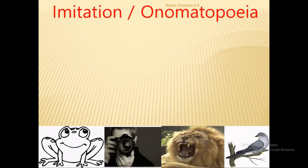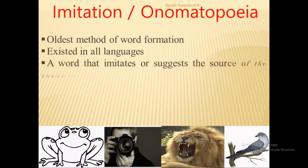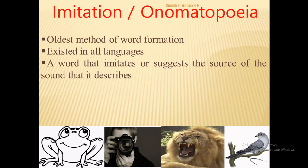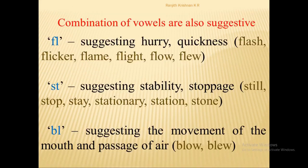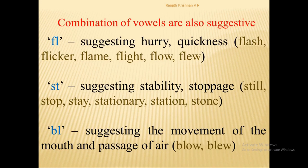Then imitation, also known as onomatopoeia — one of the important and oldest processes of word formation, present in all languages. A word imitates or suggests the source of the sound it describes; examples include 'flash' and 'cuckoo.' Even the combination of certain sounds is suggestive: the combination 'fl-' suggests quickness — flash, flicker, flame, flight, flow, flu. The combination 'st-' suggests stability or stoppage — still, stop, stay, stationary. The combination 'bl-' connects to the movement of the mouth and passage of air — blow, blue.